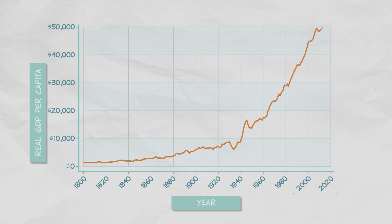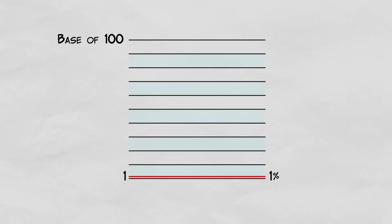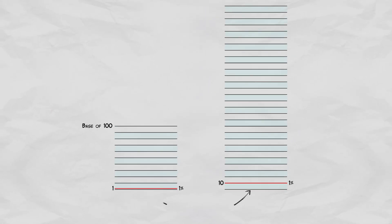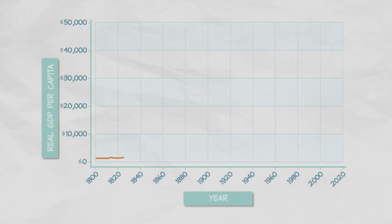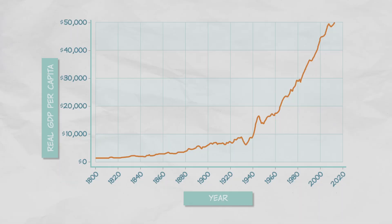This graph shows real GDP per capita in the United States since 1800. A 1% increase from a base of 100 is 1, but a 1% increase from a base of 1,000 is 10. So a graph like this can make it seem as if the economy is growing at a faster and faster rate. Actually, all that's really going on is a change in the base — the size of the economy. To handle this issue, we're going to change the graph to a ratio scale.